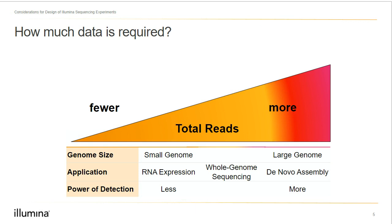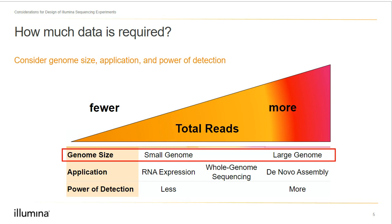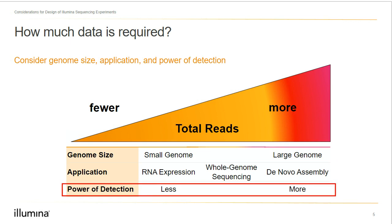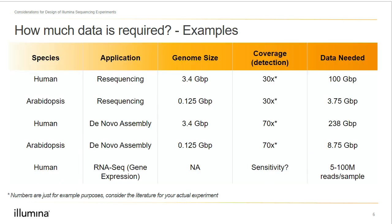Factors like genome size, application, and power of detection all matter in determining how much data we'll need to answer a hypothesis. A smaller genome will require fewer total reads than a larger genome. The type of application can also greatly affect the amount of data required. Power of detection can greatly change the amount of data needed — as can be the case when detecting germline variants, which require a lower power of detection, versus somatic variant calling, which requires a higher power of detection. Let's consider this with some rough numbers and examples.